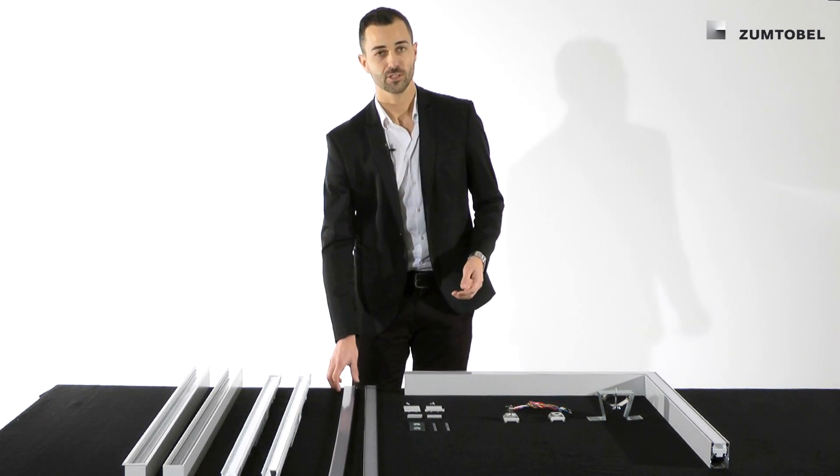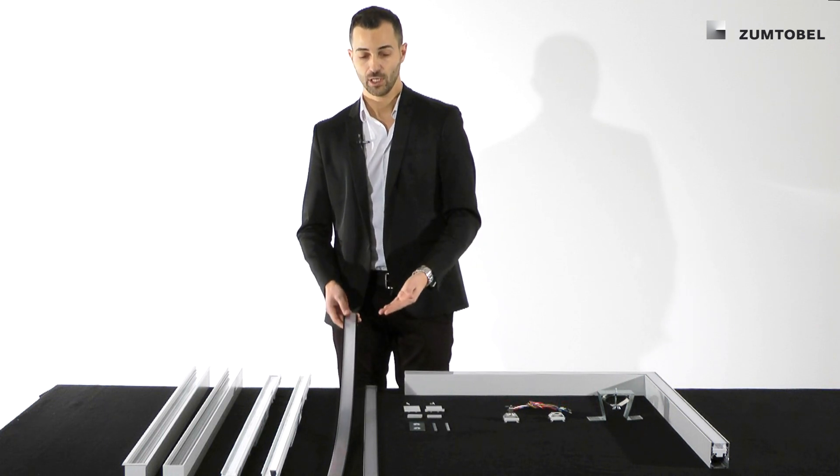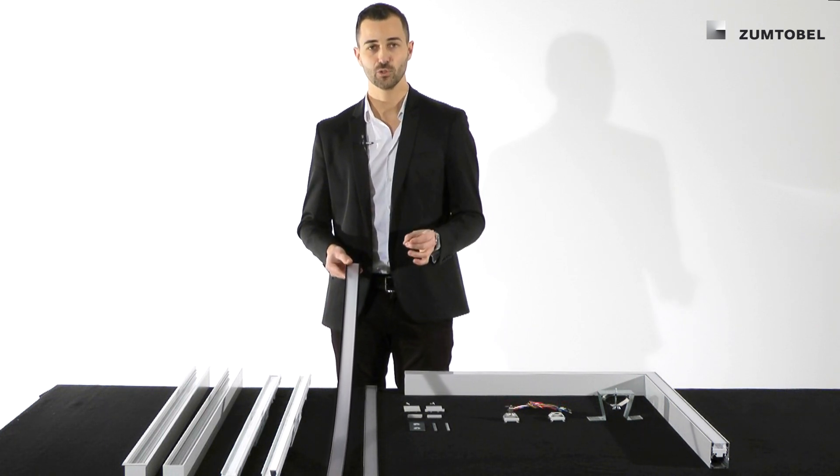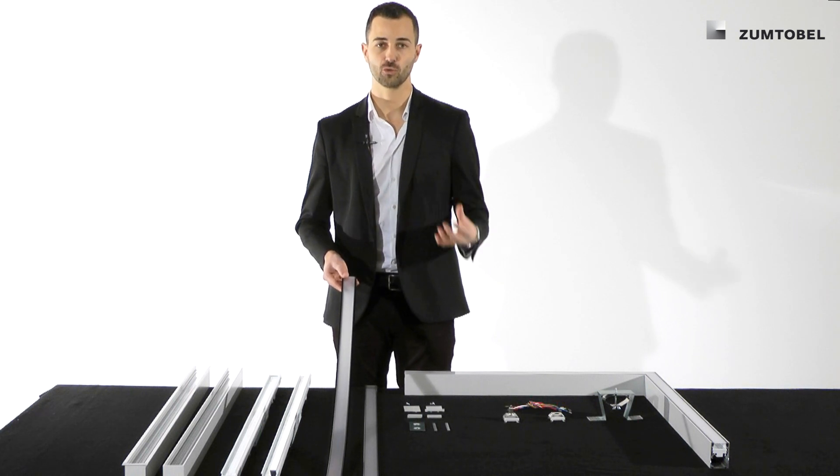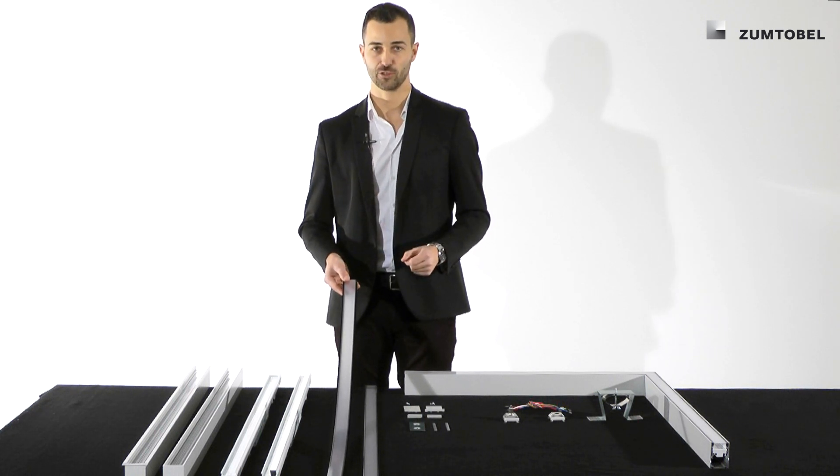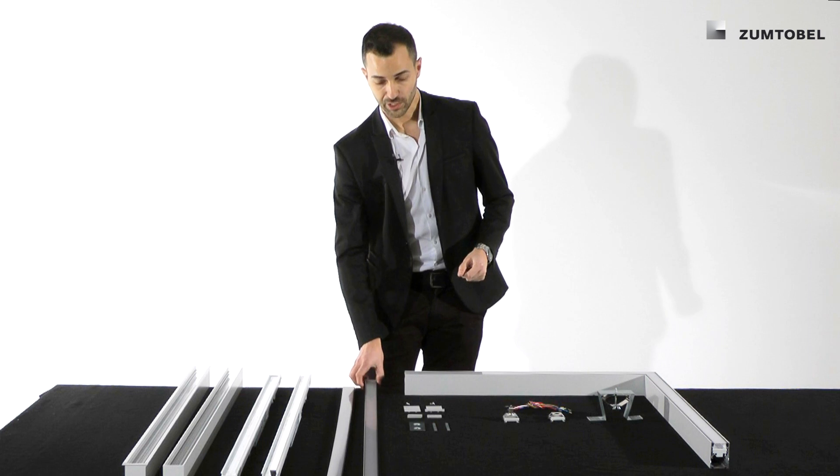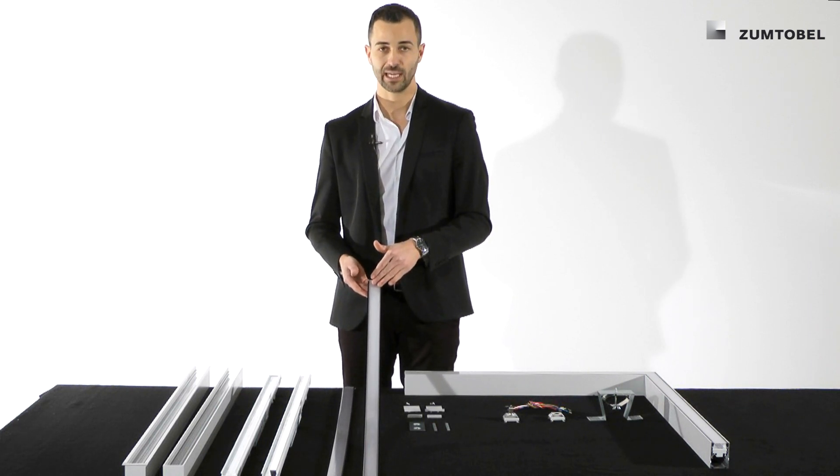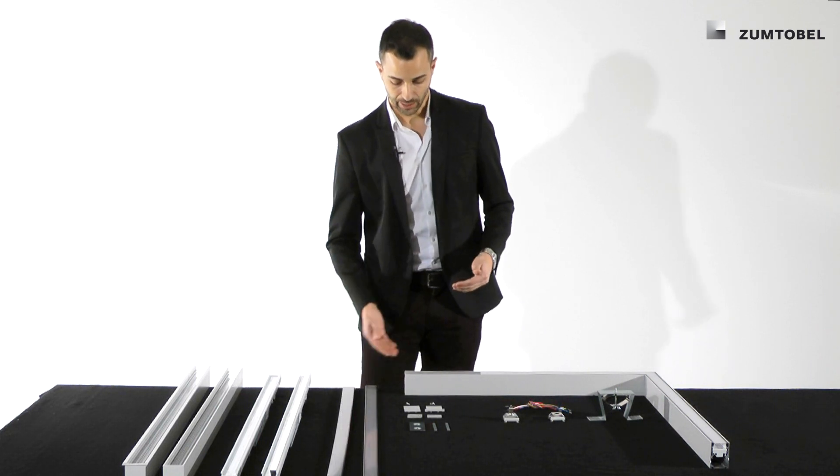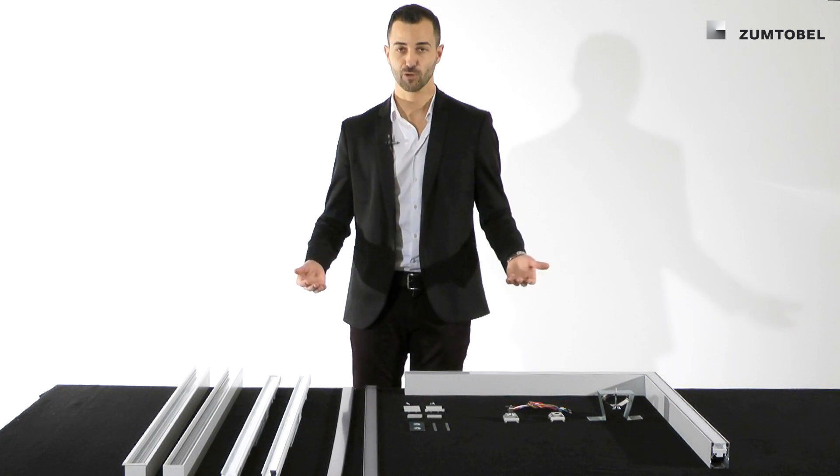What is also important for the wall washer, you have only a slightly diffused diffuser. Because, otherwise, we would destroy the asymmetric light distribution. For the other optics, we have the standard Opal, the PC, and also the office optic in the portfolio.